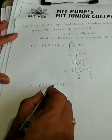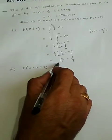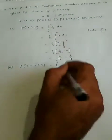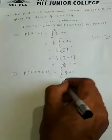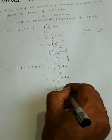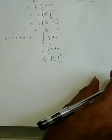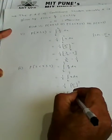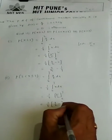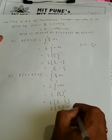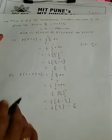For P(2 < X ≤ 3), the interval is from 2 to 3. Since 2 to 3 lies within 0 and 4, the function is f(x) = x/8. So the integral from 2 to 3 of x/8 dx equals 1/8 times x²/2 evaluated from 2 to 3. Upper limit minus lower limit: 9/2 minus 4/2 = 5/2. So 1/8 × 5/2 = 5/16. Therefore P(2 < X ≤ 3) = 5/16.